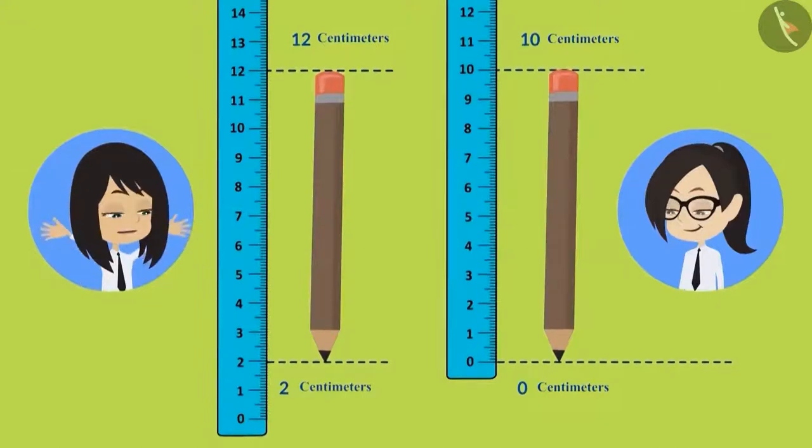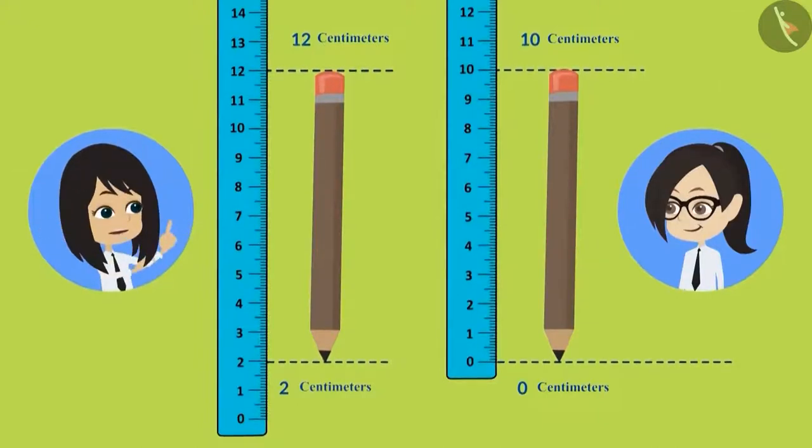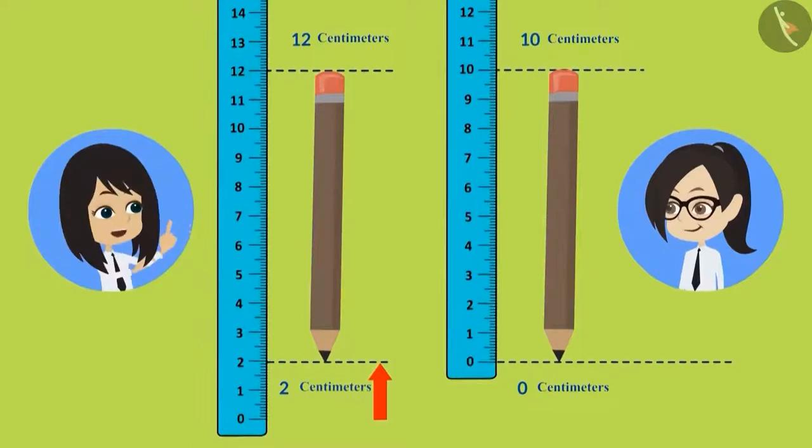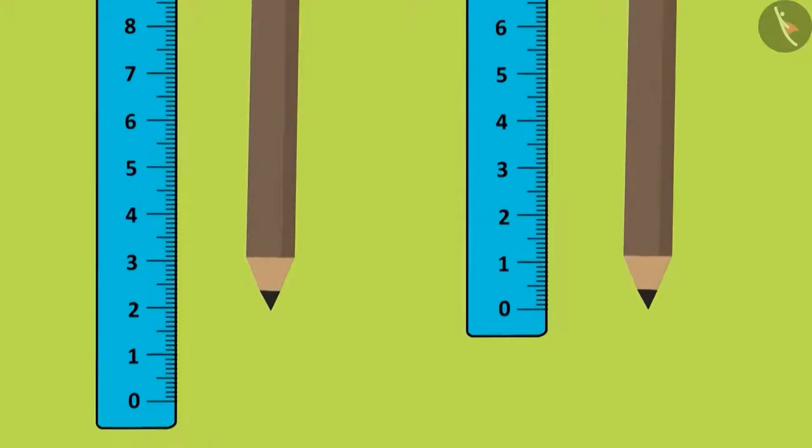The problem with keeping the pencil at 2 centimeters is that there is no pencil from 0 centimeters to 2 centimeters, and I included that length as well in the measurement. Now I will correct it. I will keep the pencil at 0 centimeters.